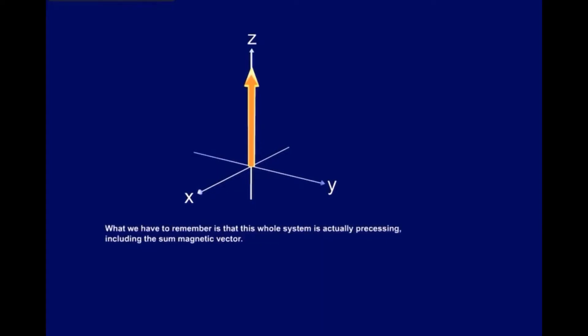What we have to remember is that this whole system is actually precessing, including the sum magnetic vector. And thus, after the RF pulse is switched off, the sum vector will actually perform a spiraling motion. By switching the RF pulse on again, you can start this animation over and over again.